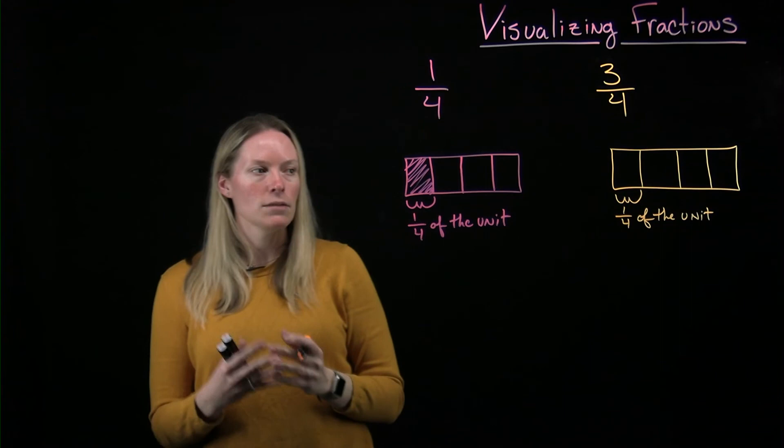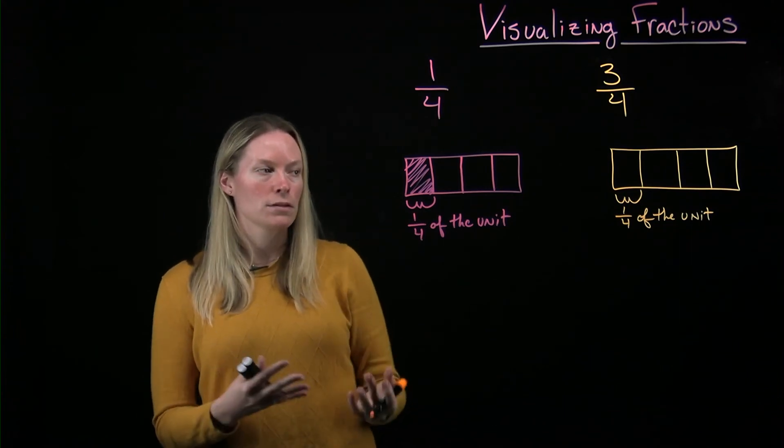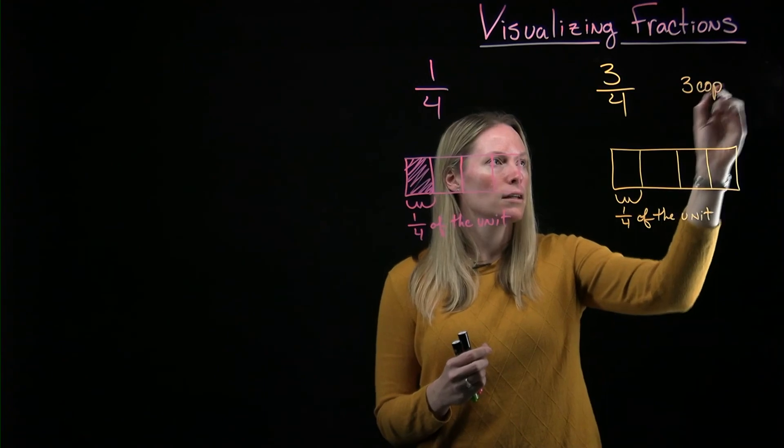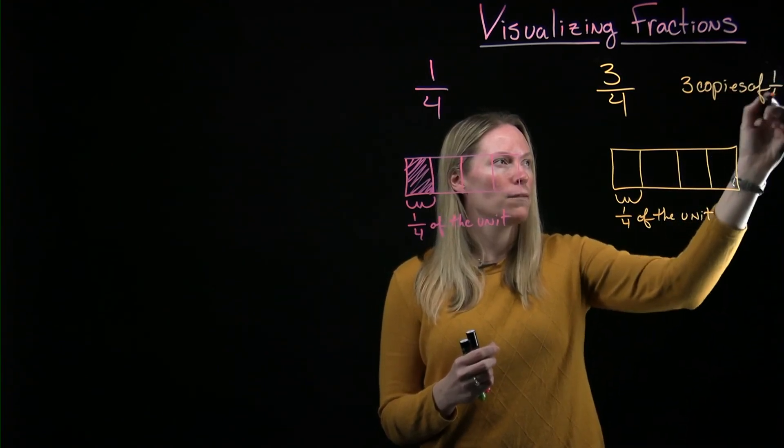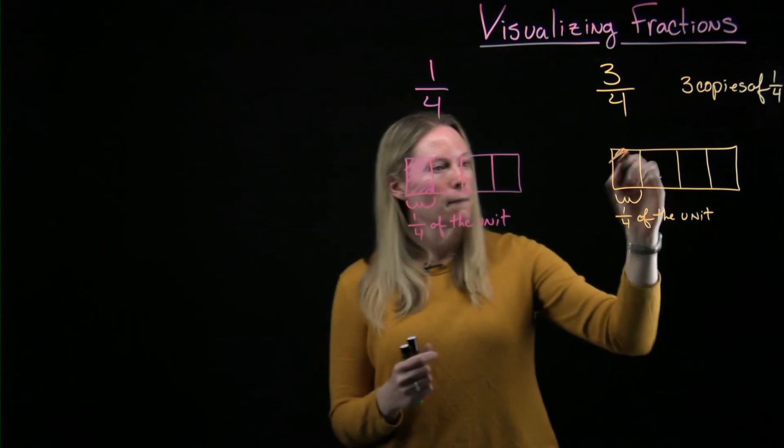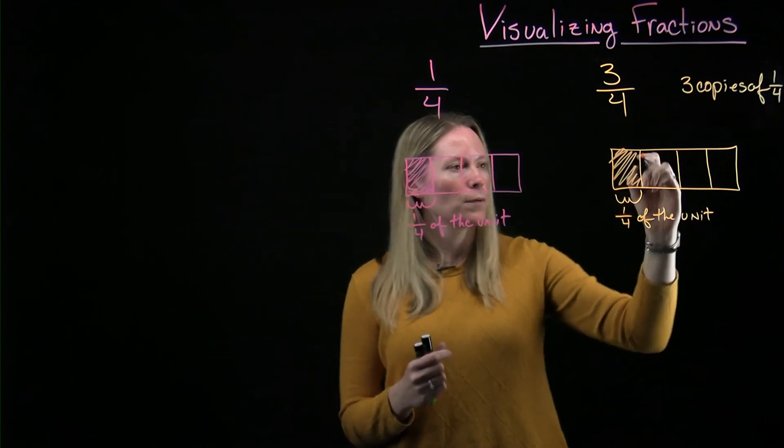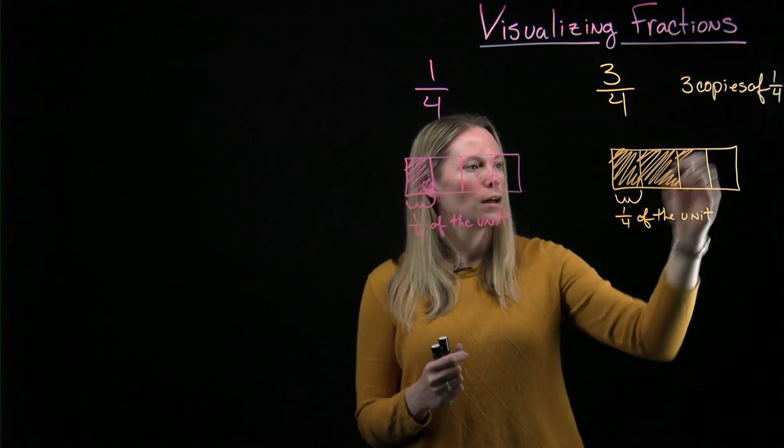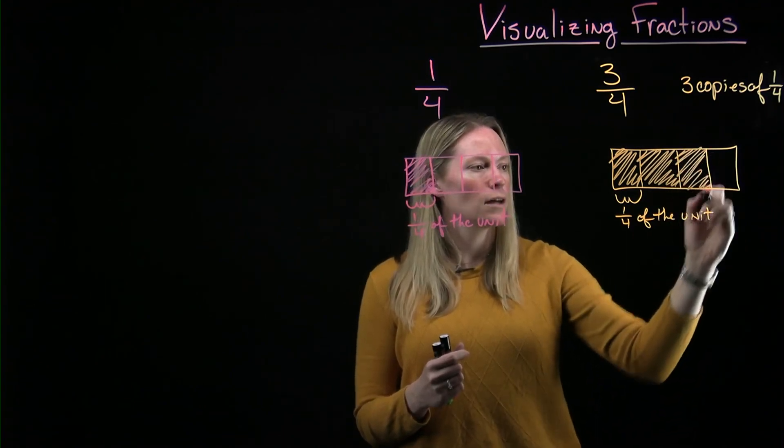If I need to represent three-fourths, then I need three copies of one-fourth. So one copy of one-fourth, two copies of one-fourth, three copies of one-fourth.